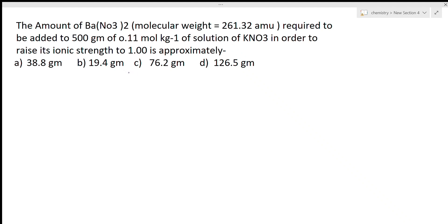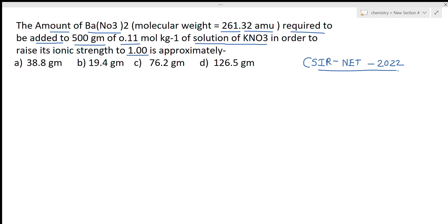Welcome to chemistry class. I am Priyanka Jain and today we are solving questions from the CSIR NET February 2022 question paper. The question is based on ionic strength: the amount of Ba(NO₃)₂ — molecular weight 261.32 — required to be added to 500 grams of a 0.11 mol/kg KNO₃ solution in order to raise its ionic strength to 1.